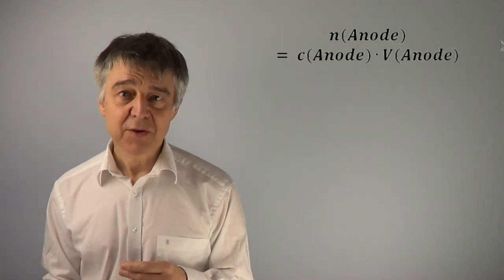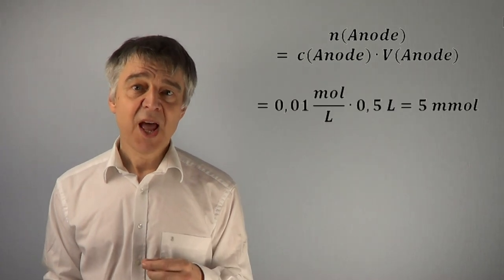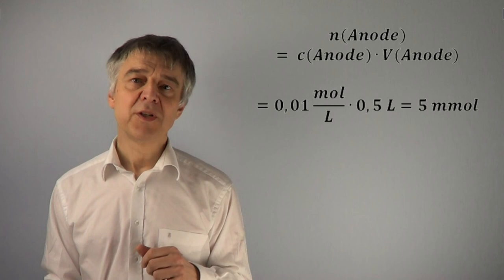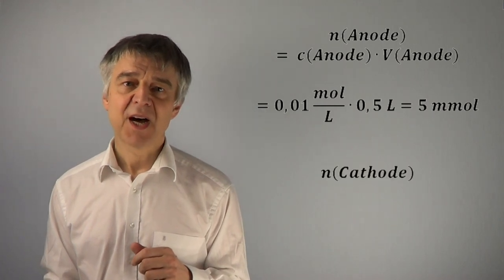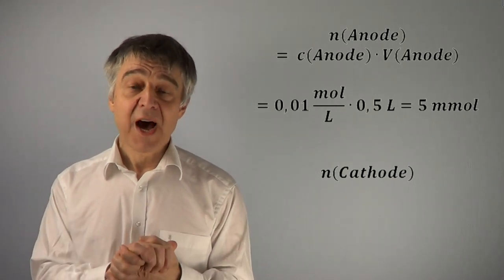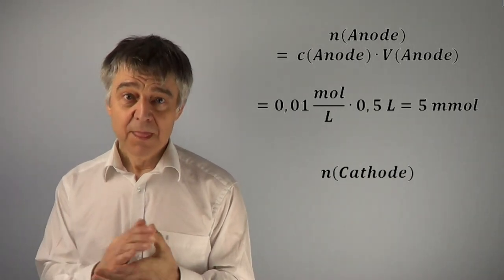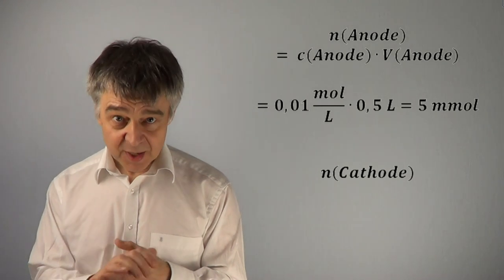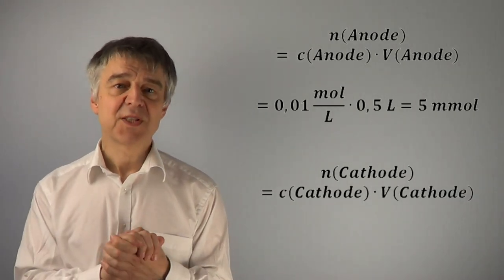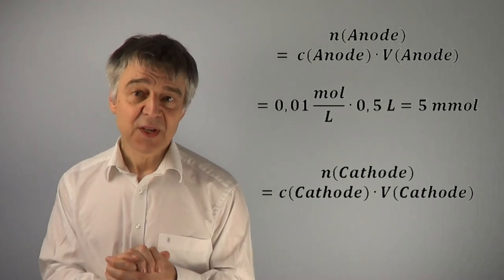The molar amount of HCl in the anode compartment is calculated as concentration times volume, 0.01 mol/L times 0.5 L equals 5 mmol. In the cathode compartment, we also end up with 5 mmol HCl prior to electrolysis.